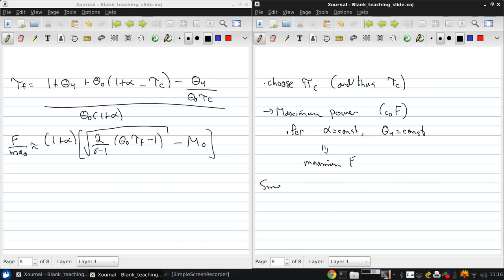This is because as τ_f increases, thrust increases, so we want to choose τ_c to maximize τ_f.